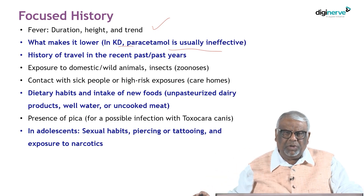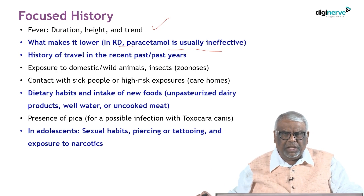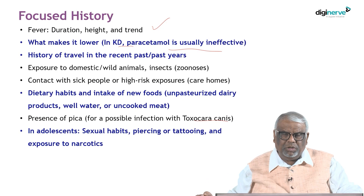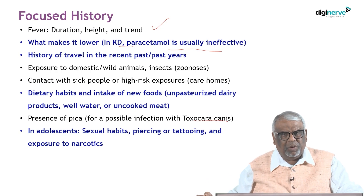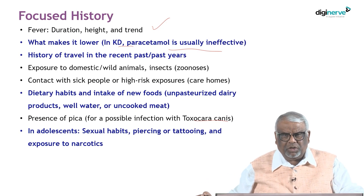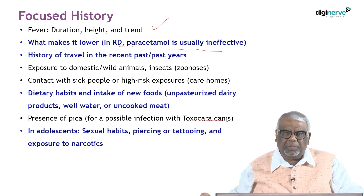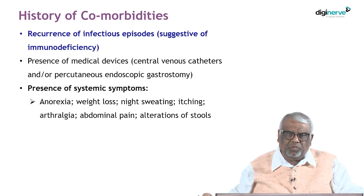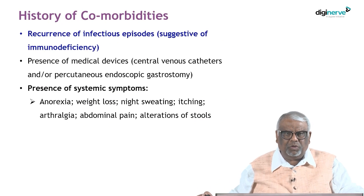Ask about dietary habits and intake of new foods, especially unpasteurized dairy products, which can result in Salmonella infection. Ask about uncooked meat and presence of pica for possible infection with Toxocara. In adolescents, ask about sexual habits, piercing or tattooing, and exposure to narcotics — especially for Hepatitis B, Hepatitis C, and HIV.